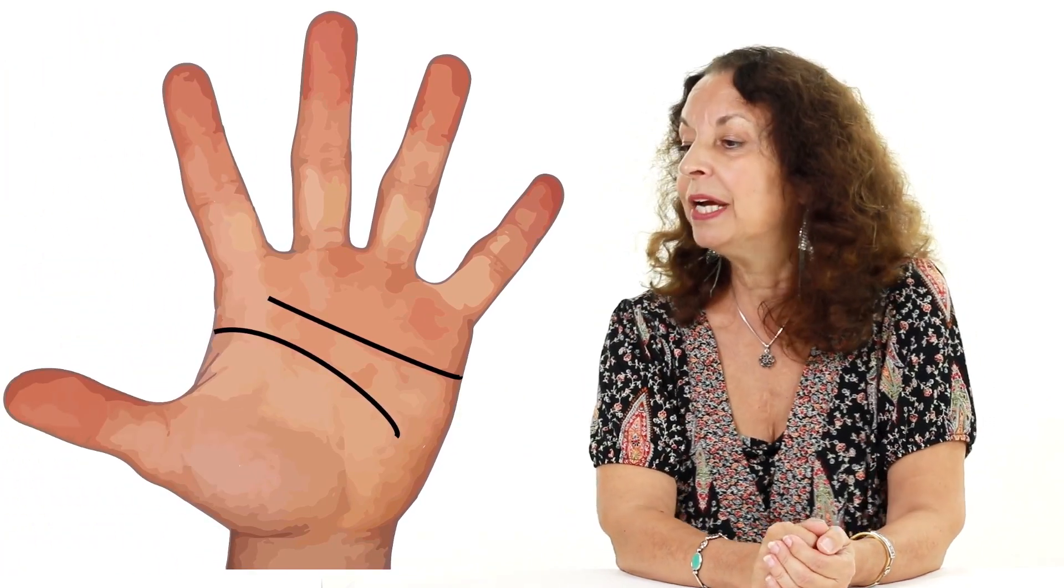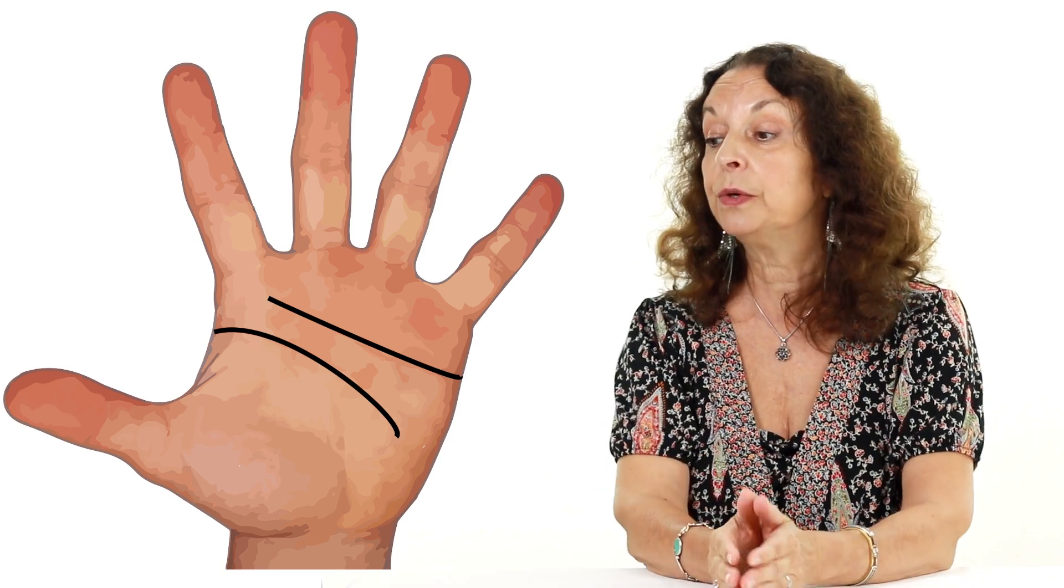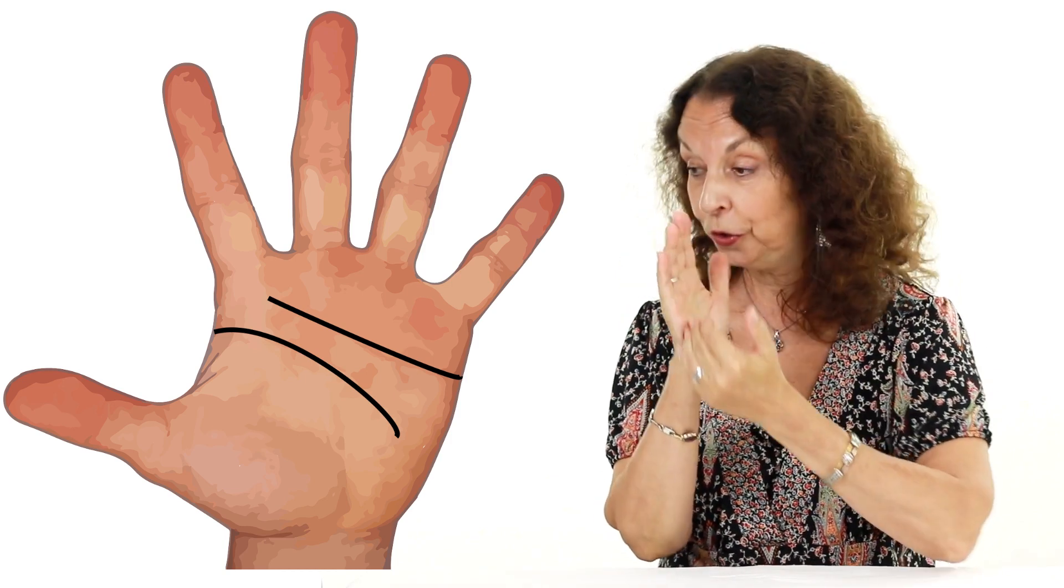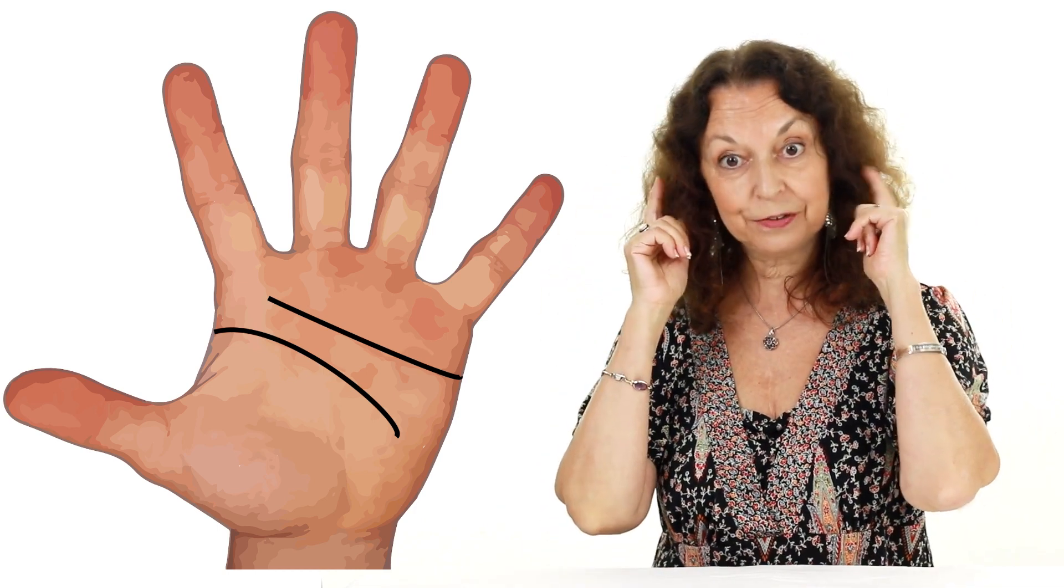Next, we are going to look at the opposite. So in this case, it's going to be a straight heart and a curved head. So because of the curved head, we are broad-minded and we are generous, but it's the head. It's not the heart.